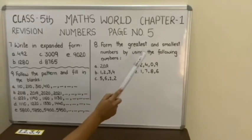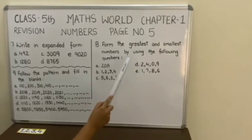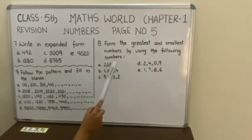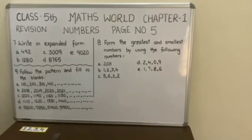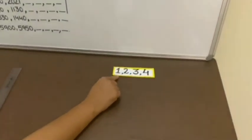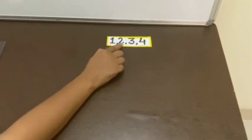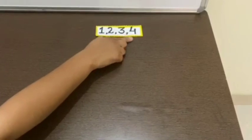Next question number 8. Form the greatest and smallest numbers by using the following numbers. So here we will solve part B. Statement is 1, 2, 3, 4.